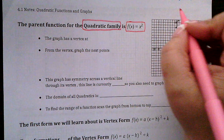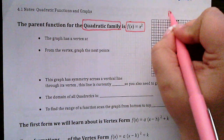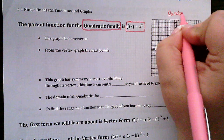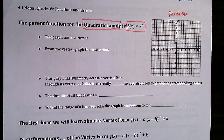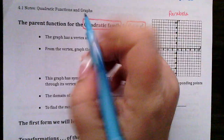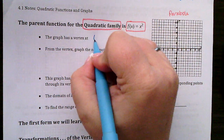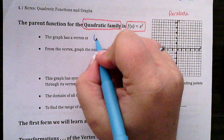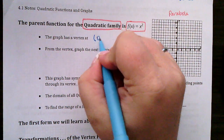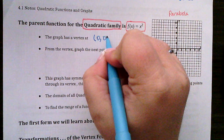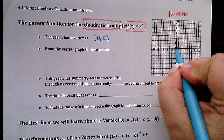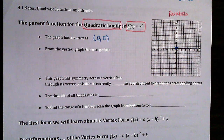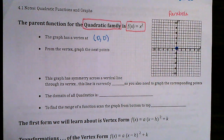A quadratic makes a parabola when we graph it. To start graphing a quadratic, just like absolute value, we have a vertex. The vertex of the original parent function is at (0, 0).